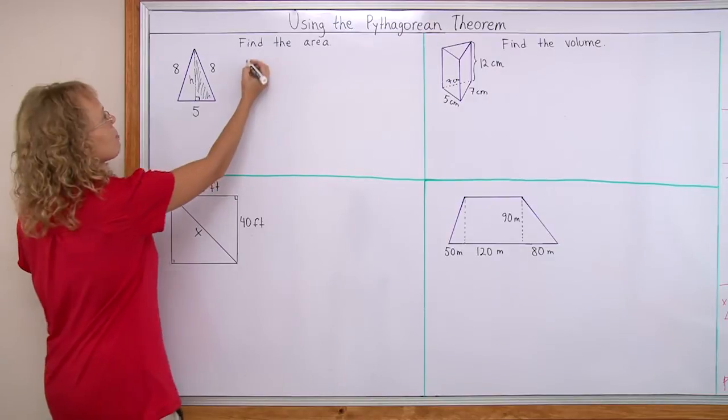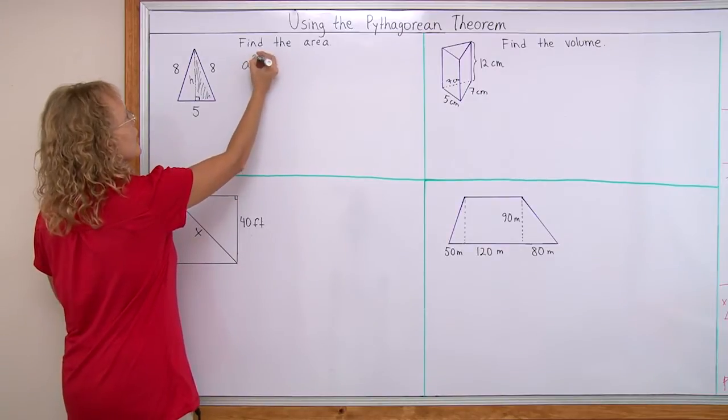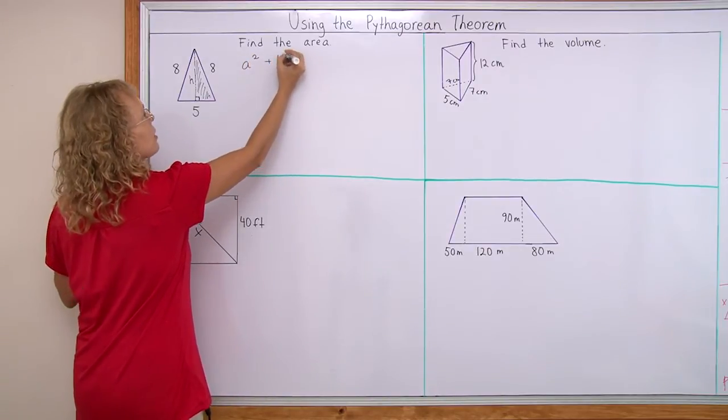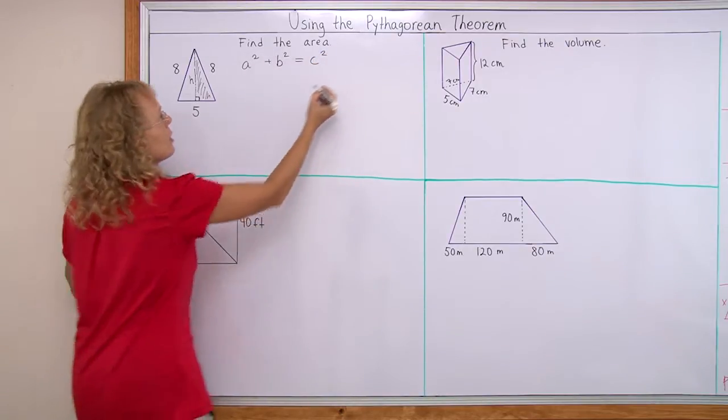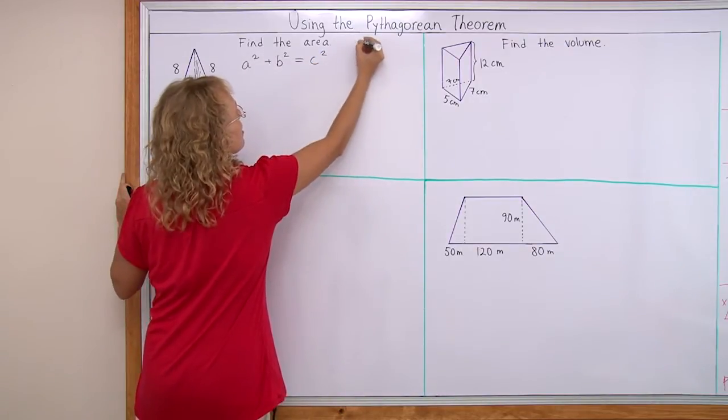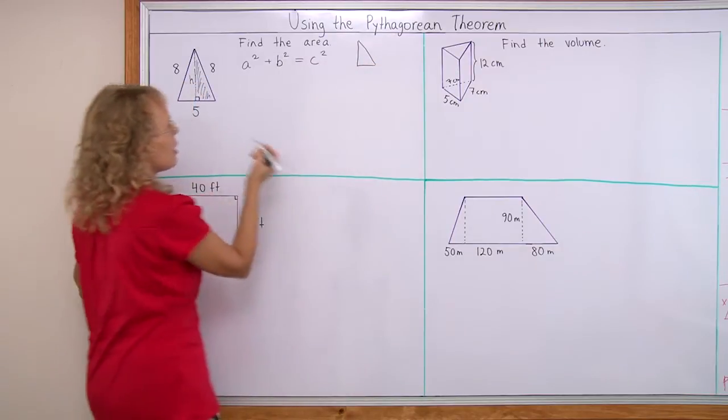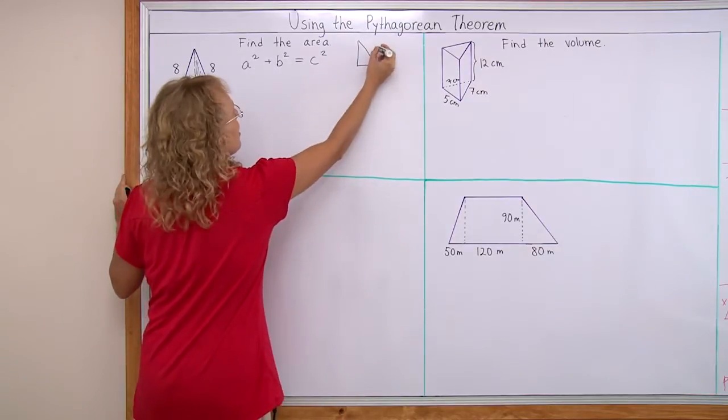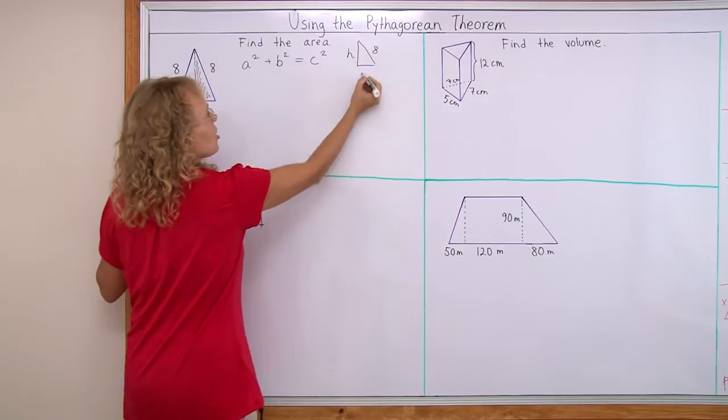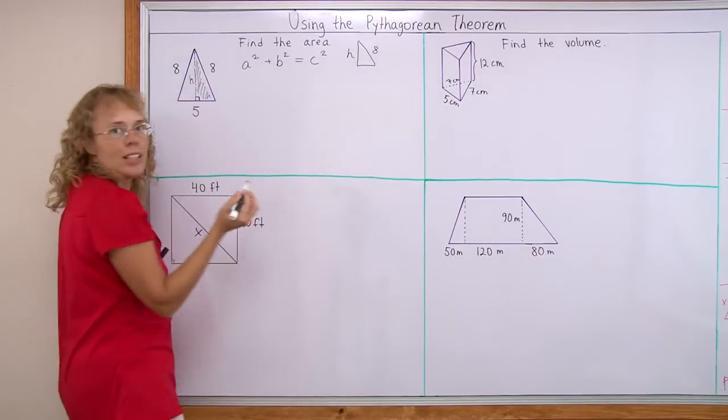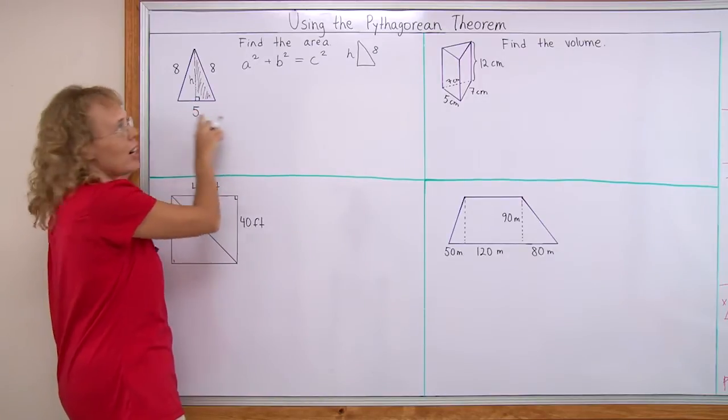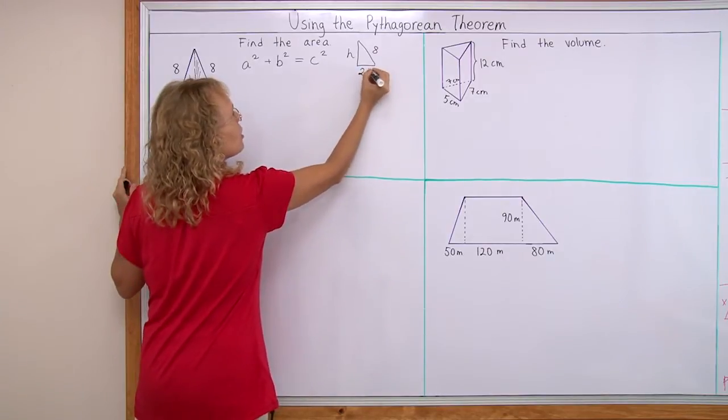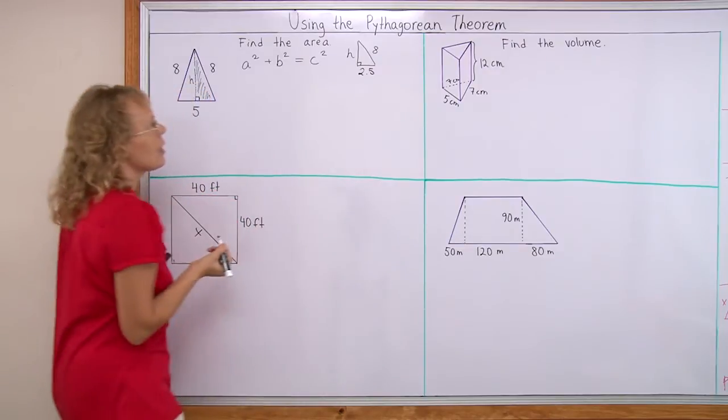Now remember the Pythagorean theorem says that a squared plus b squared equals c squared in a right triangle. Over here, this one is a right triangle here, it would be 8 and h and then this side here, this here is not 5. The whole base is 5 and this is only half of it, it is 2 and a half.